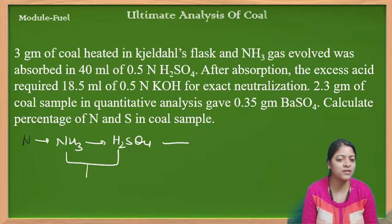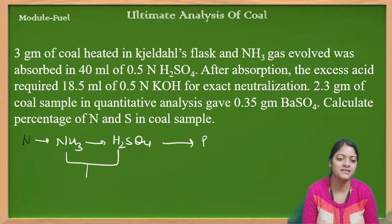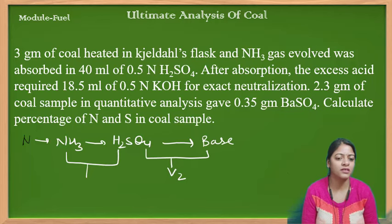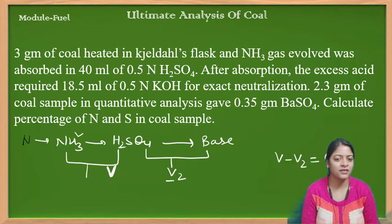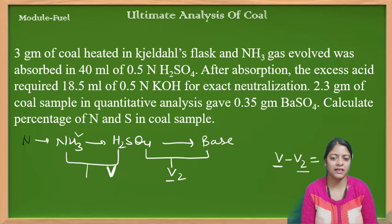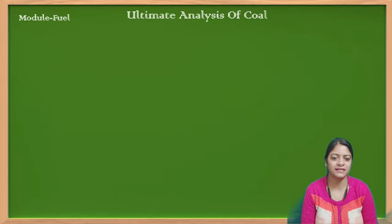यह निकालने के लिए, मैं बचे हुए H2SO4 से neutralization titration कराऊंगी किसी base से। इसको neutralize करने में जितना use हुआ — अगर यह मेरा total volume V1 था, तो V1 में से अगर मैं V2 minus कर दूँ, तो जो volume आएगा वह ammonia के साथ absorb होने में use हुआ। तो मेरे total volume में से मैंने V2 minus किया है जो back titration में use हुआ।